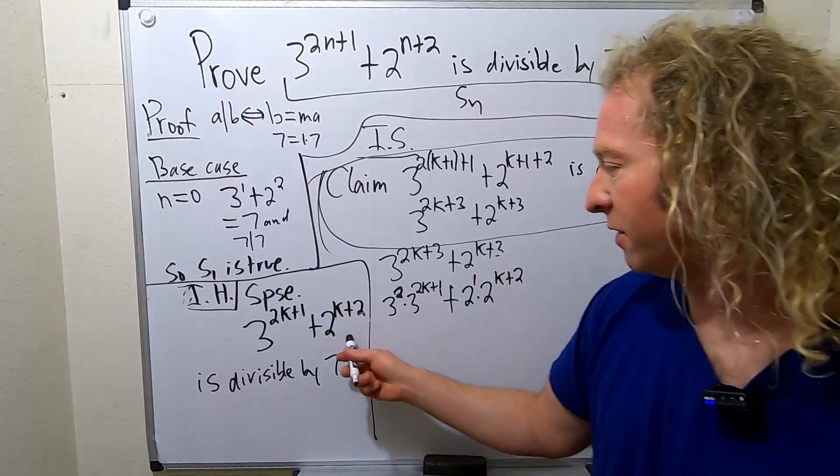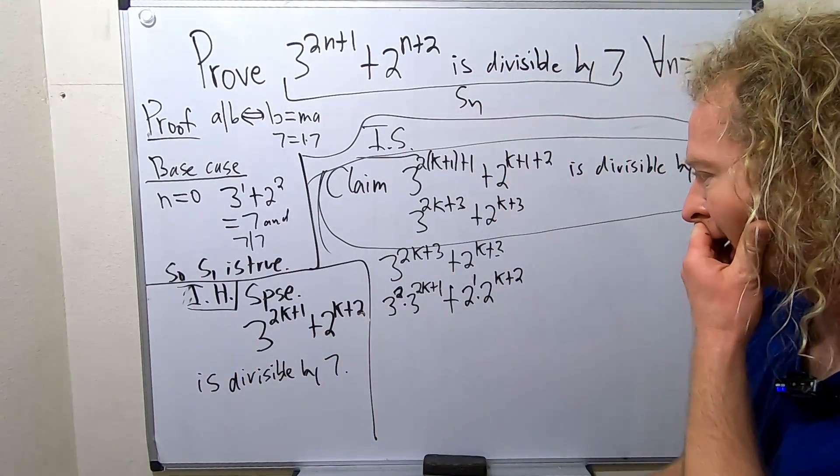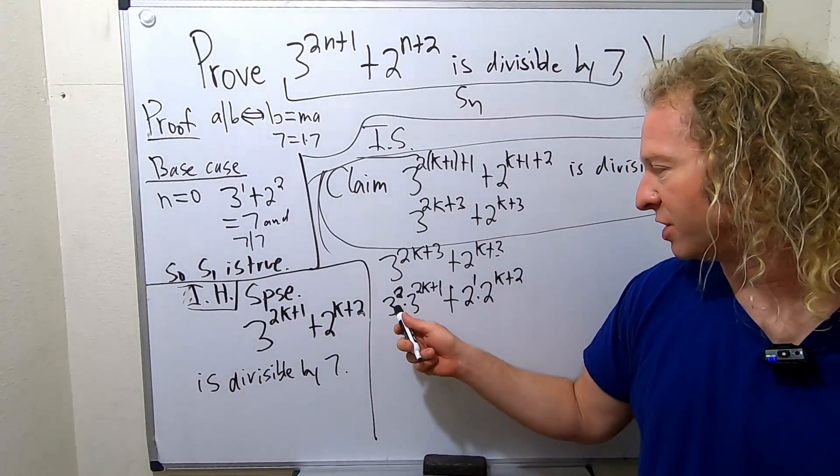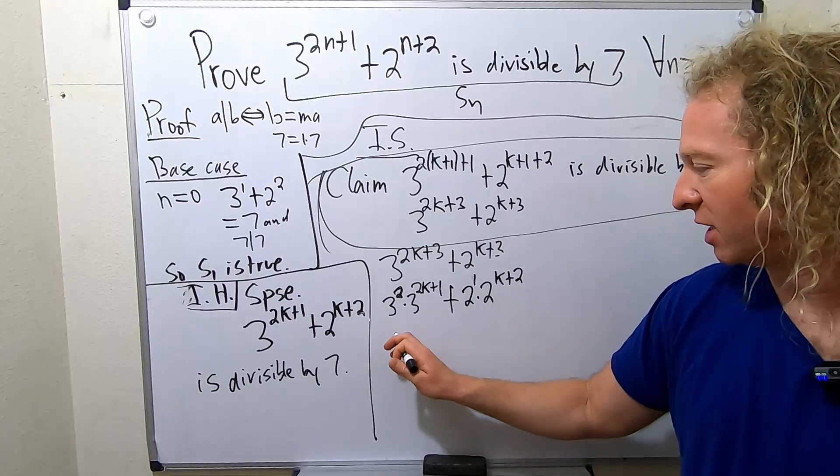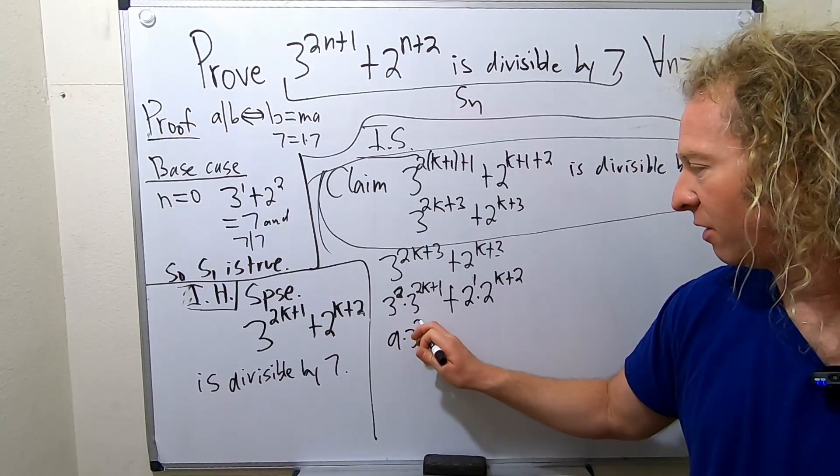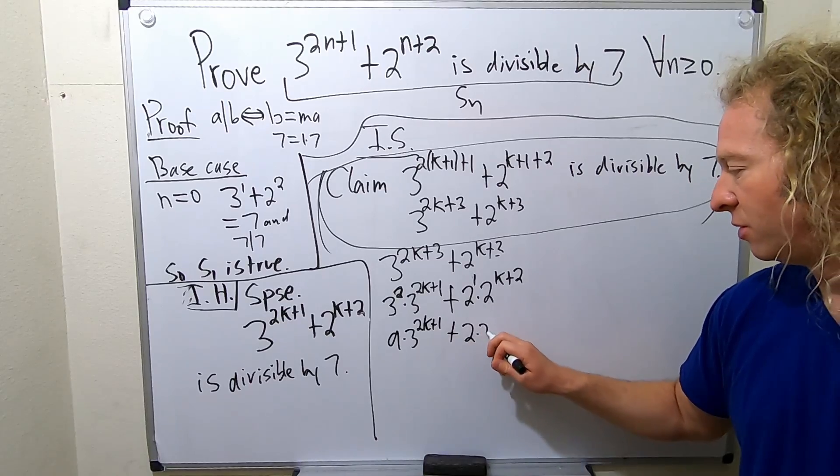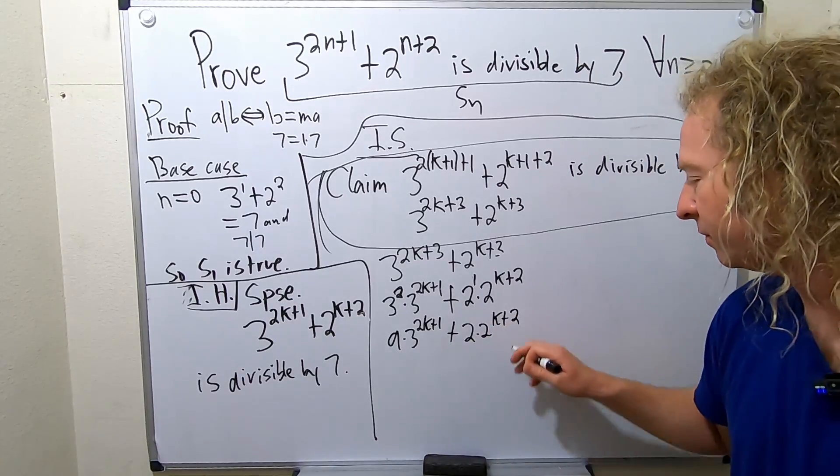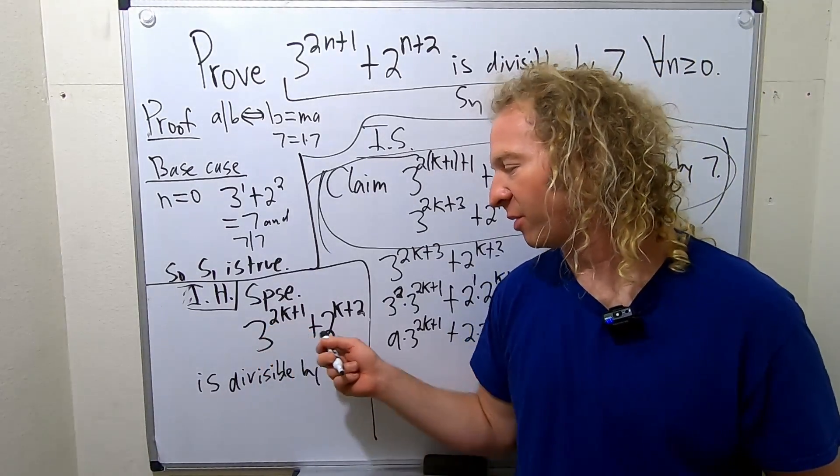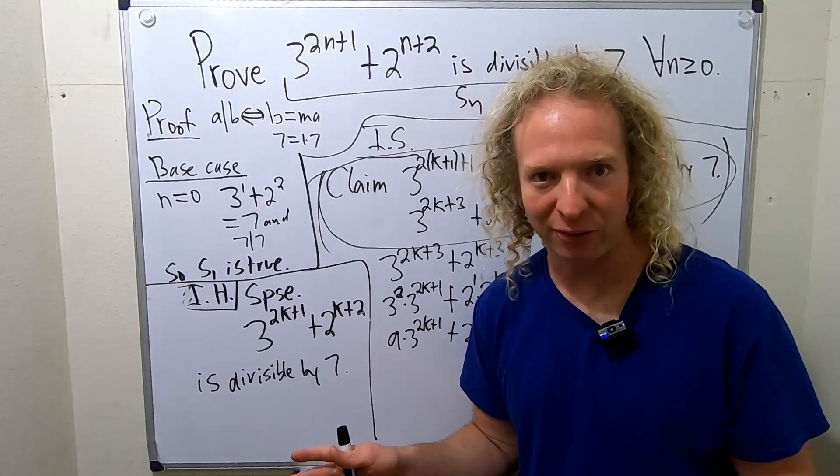So, we know that this is divisible by 7. There's 9 of these, and there's 2 of these. Let me write it again. This is 9, 3 to the 2k plus 1, plus 2, 2 to the k plus 2. So we know that whenever we have 1, 3, and 1, 2, let's just think of it like that.